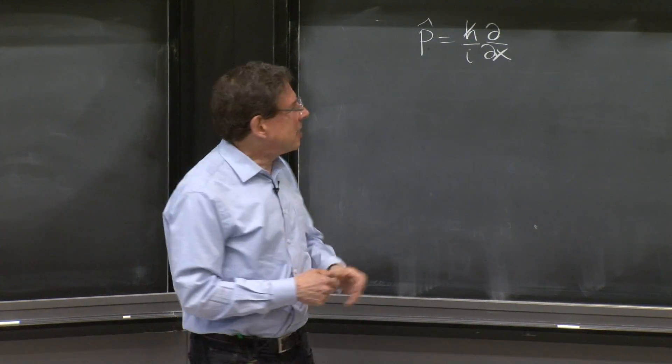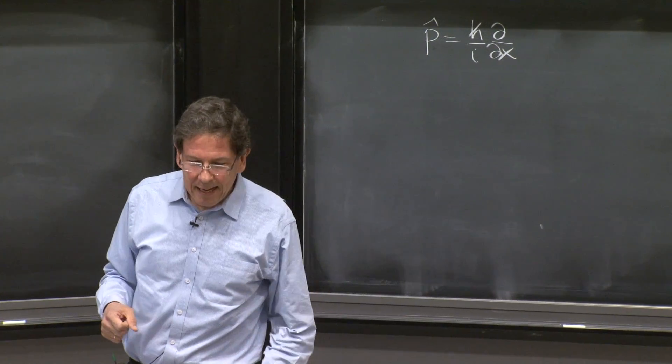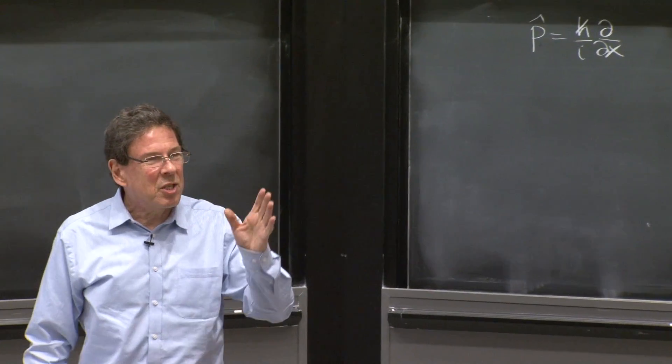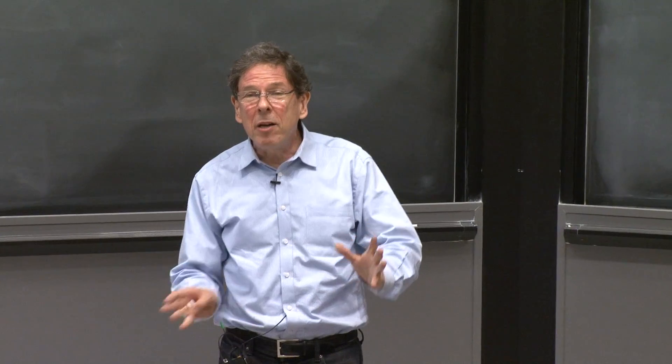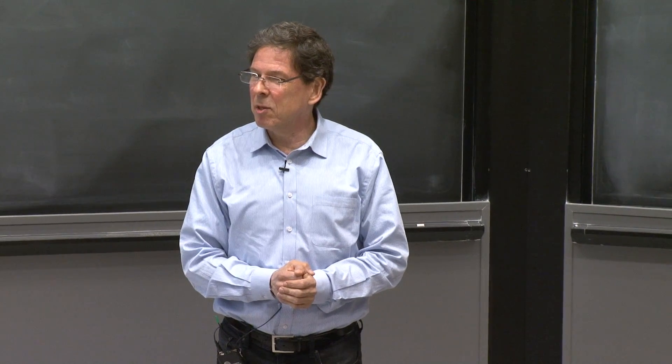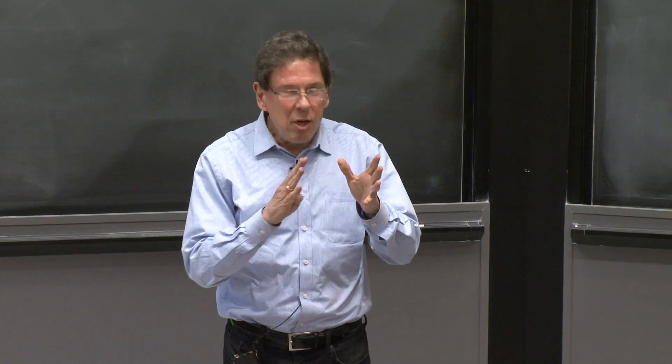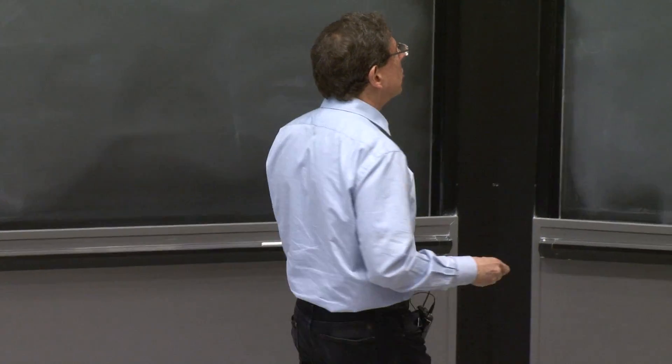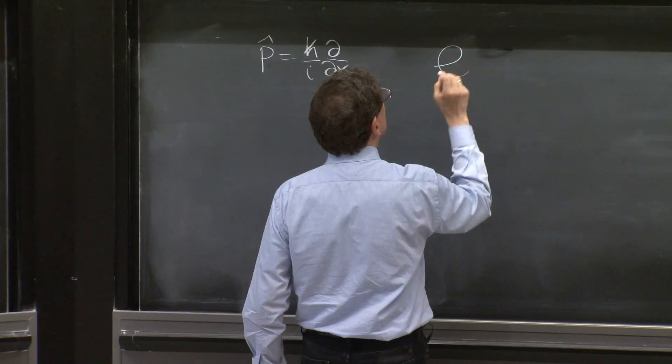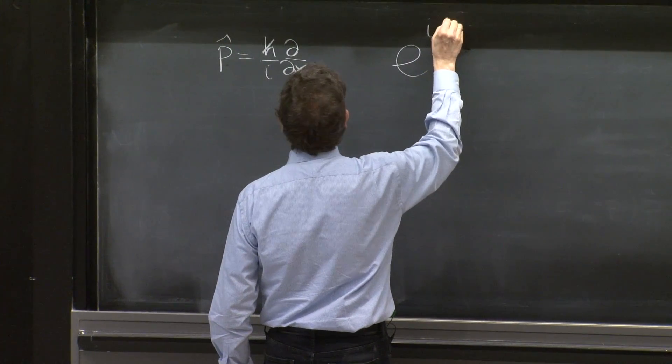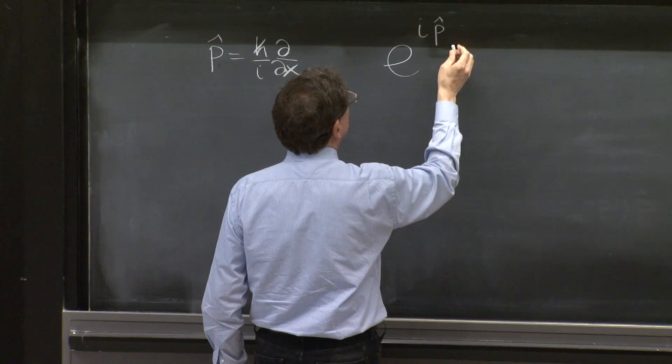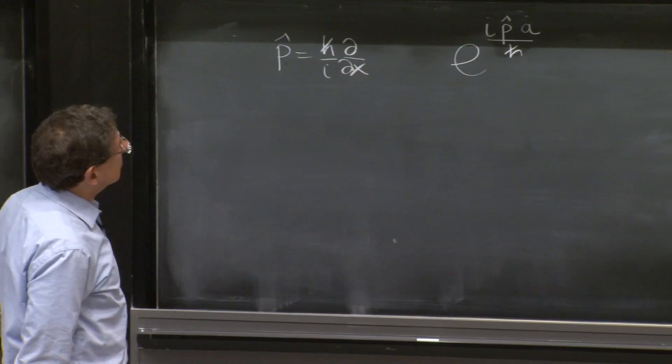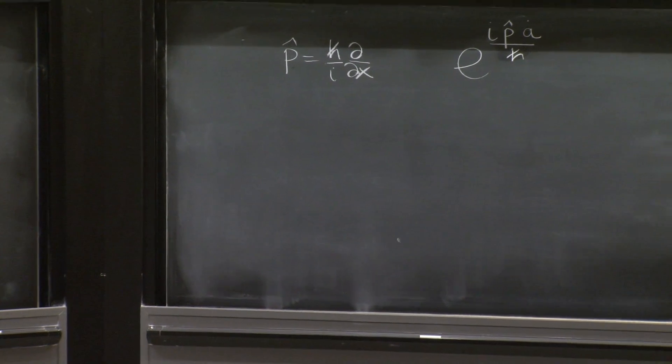That's another way of thinking of the momentum operator as a generator of translations. But how does it do it? This is a Hermitian operator, and it takes a derivative. It doesn't translate the function. But there is a universal trick, that if you exponentiate i times the Hermitian operator, you get a new kind of operator that actually moves things. So we could think of exponentiating e to the i p hat. And for purposes of units, I have to put the constant with units of length and an h bar here.